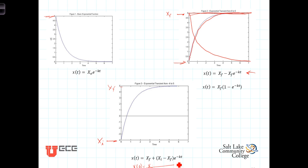Now once again, as time progresses, this exponential term goes to zero, which means then that this term here goes to zero and all we're left with is x sub f.